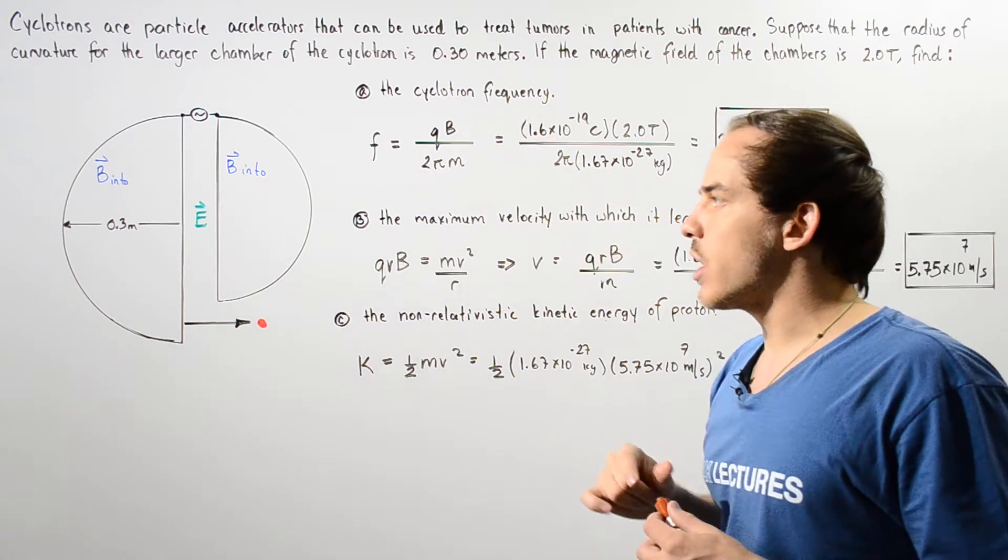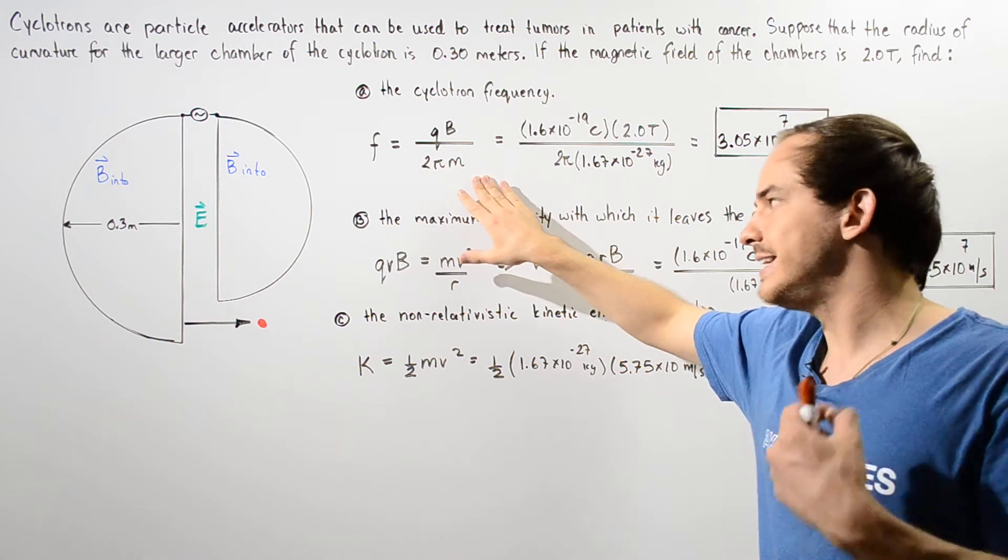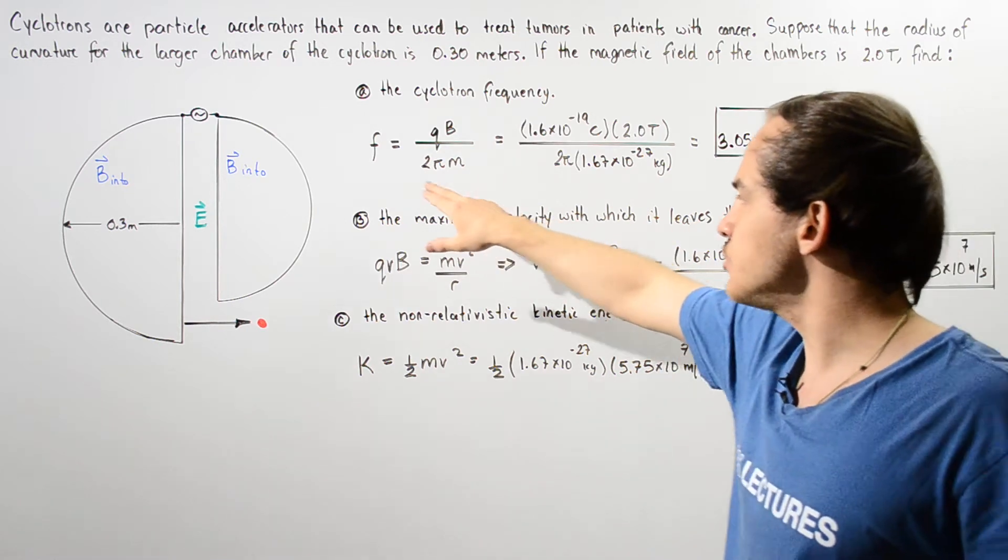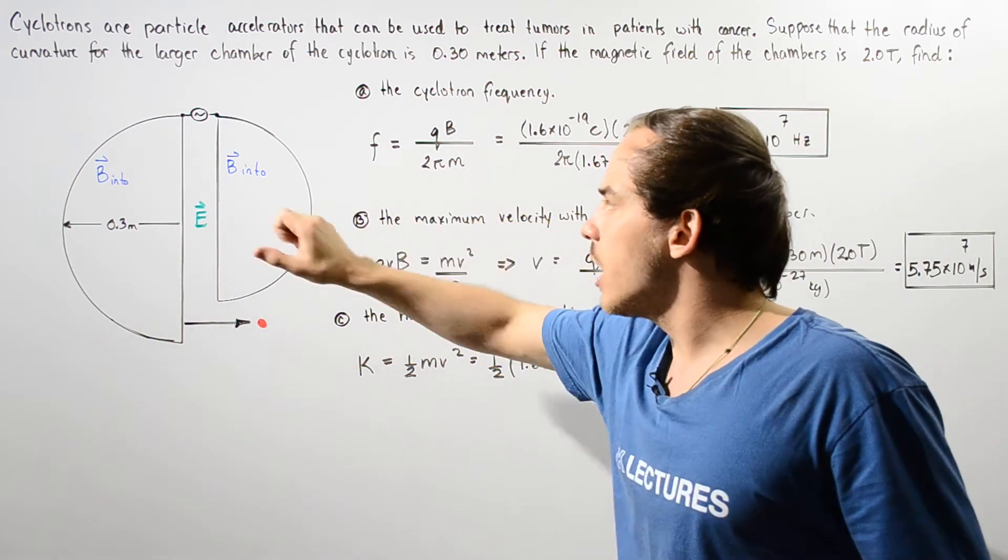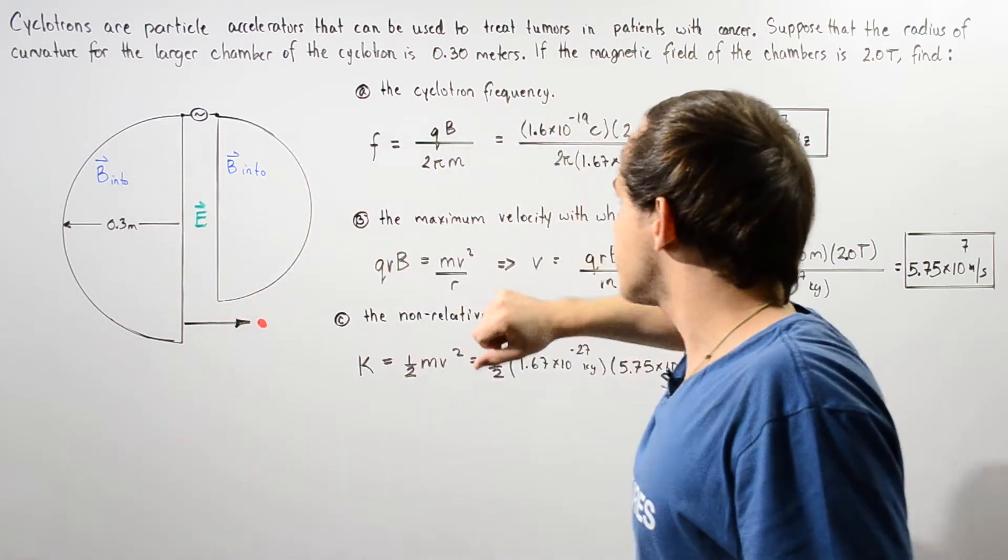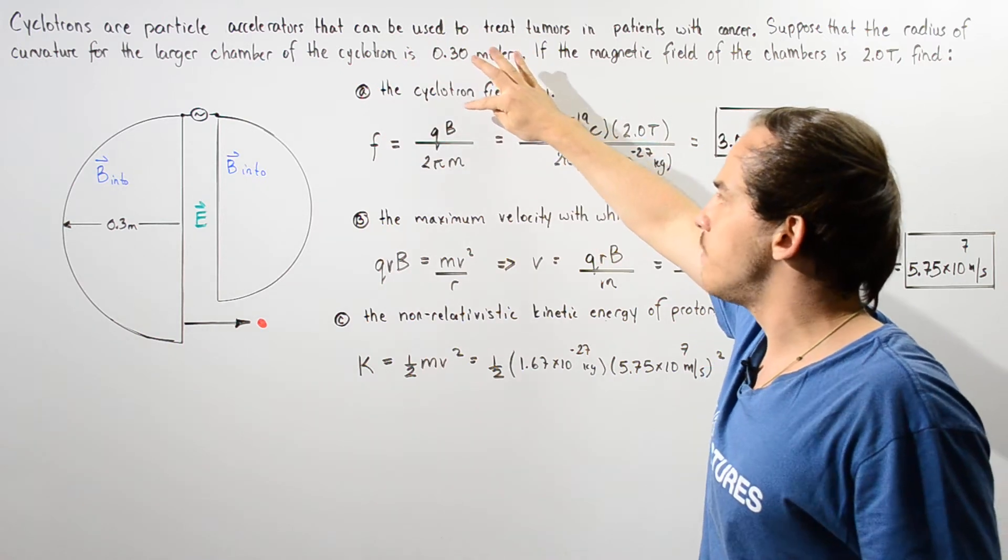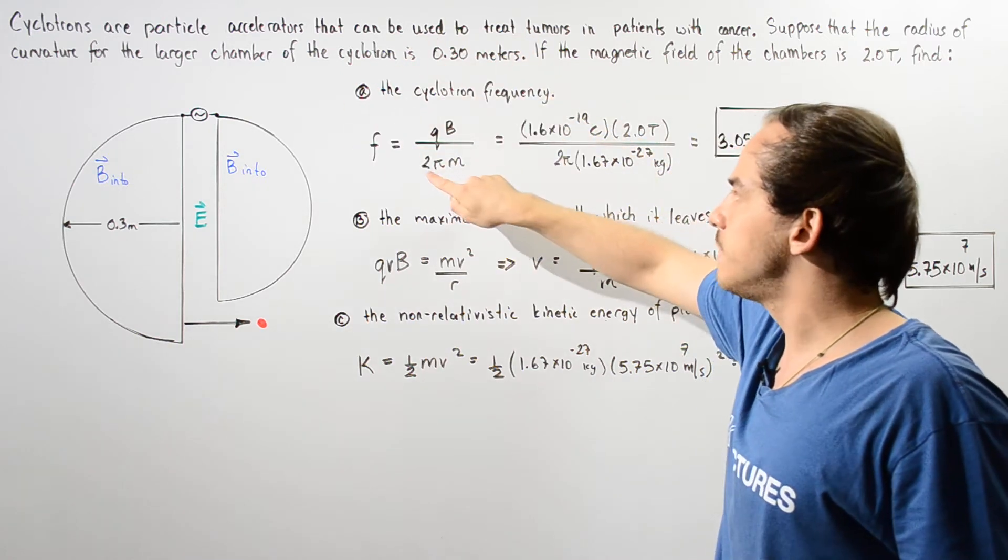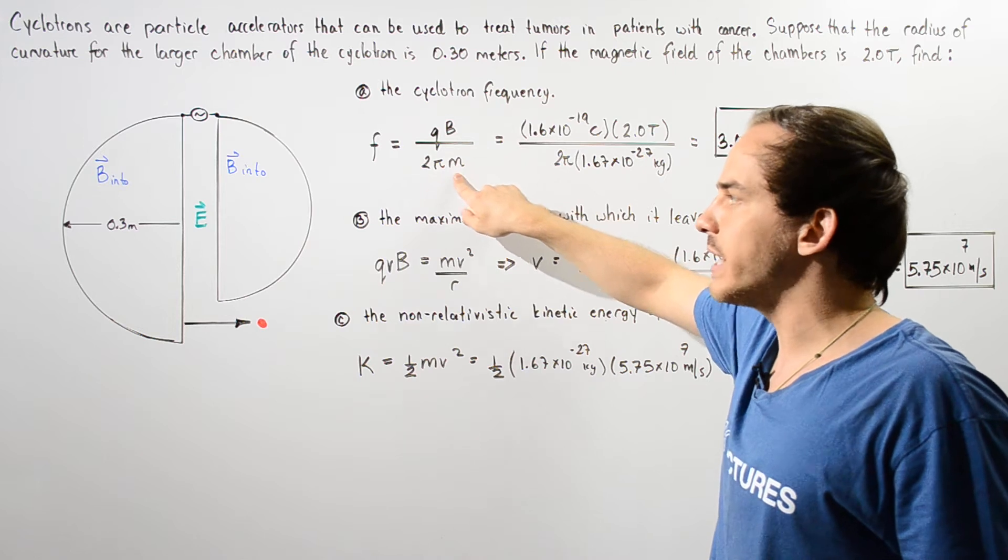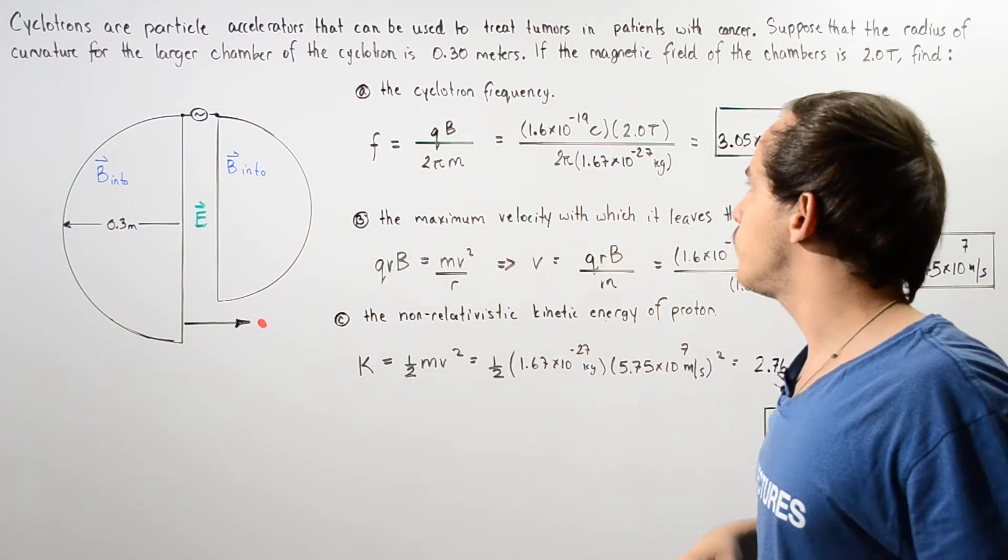So to find the cyclotron frequency, we use this equation that we defined in the previous lecture. The frequency of our oscillation of the proton about our cyclotron is given by q, the charge, multiplied by B, the magnetic field, divided by 2π multiplied by m, the mass. The charge on the proton is 1.6 × 10⁻¹⁹ coulombs.